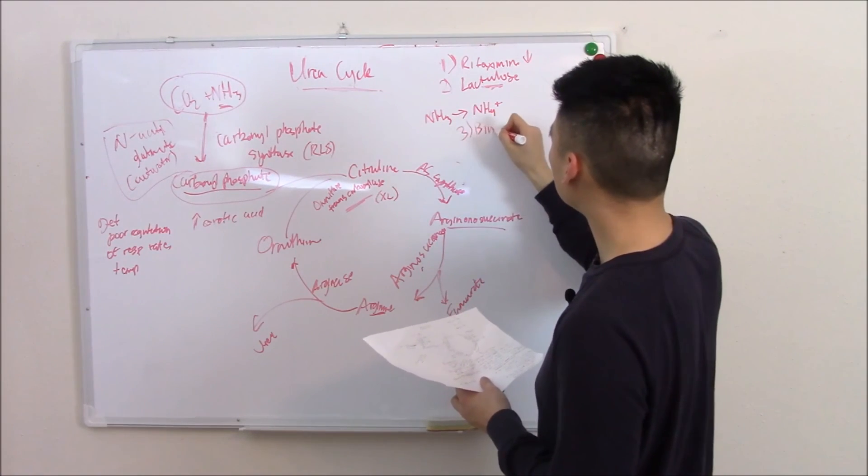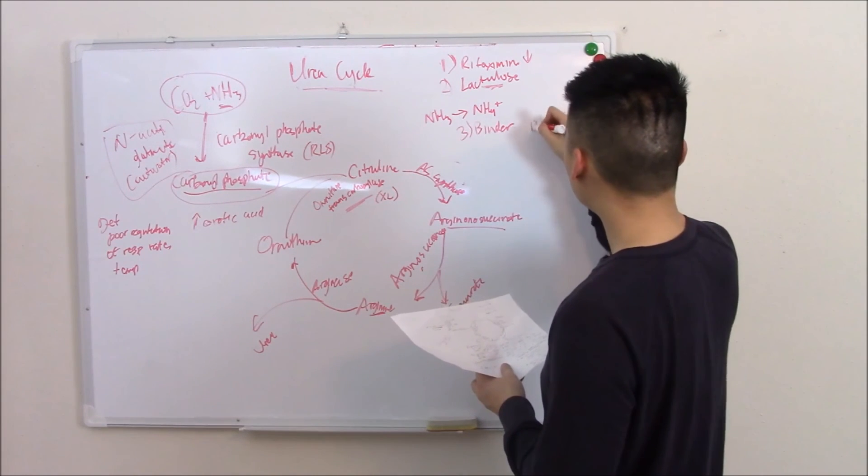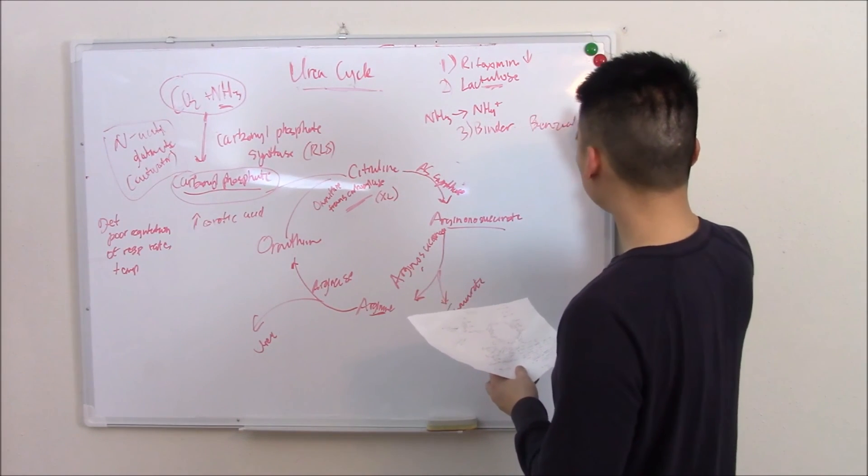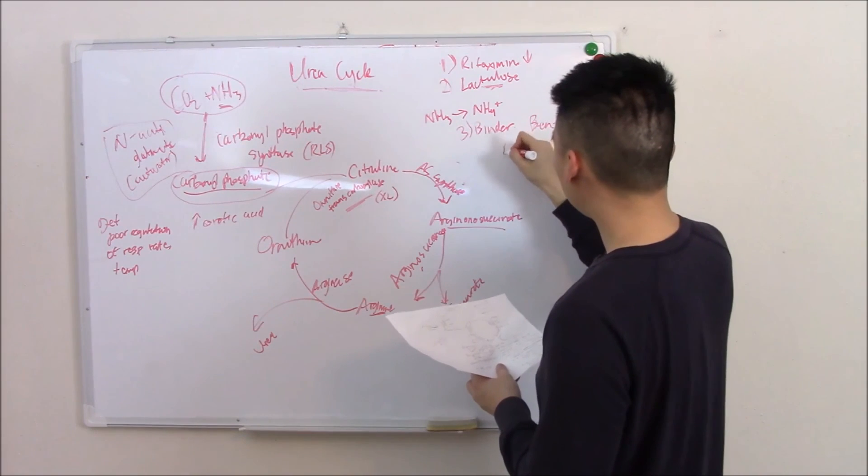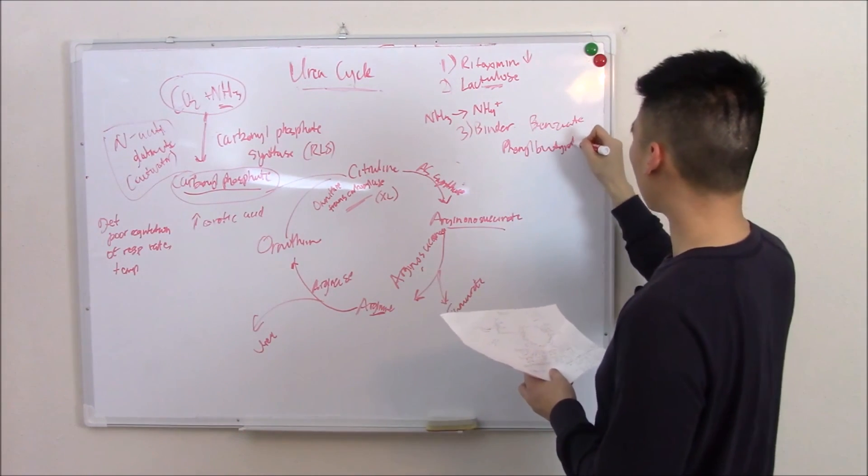You can give binders, things that bind to ammonia, like benzoate or phenylbutyrate.